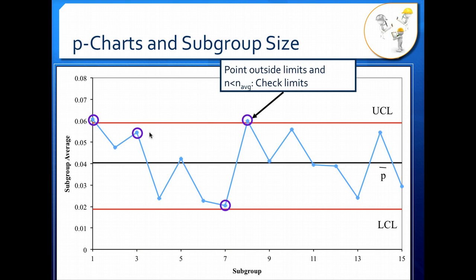What happens when we get close to the lines? If we have a point outside of our limits and our n is smaller than our average n, we want to check the limits because our actual control limit may be beyond this point. So we may be okay.